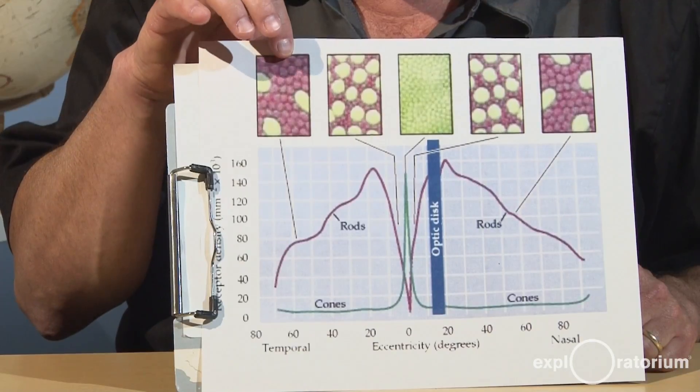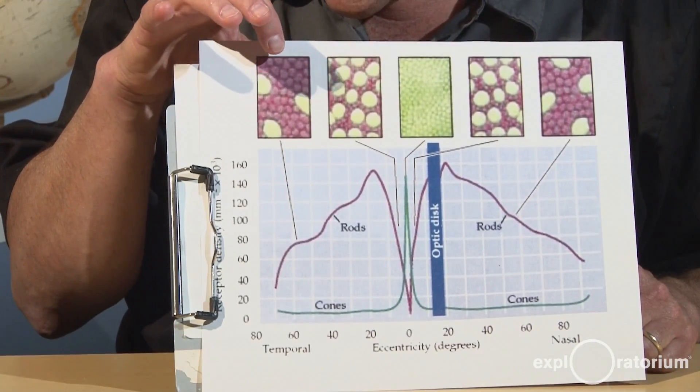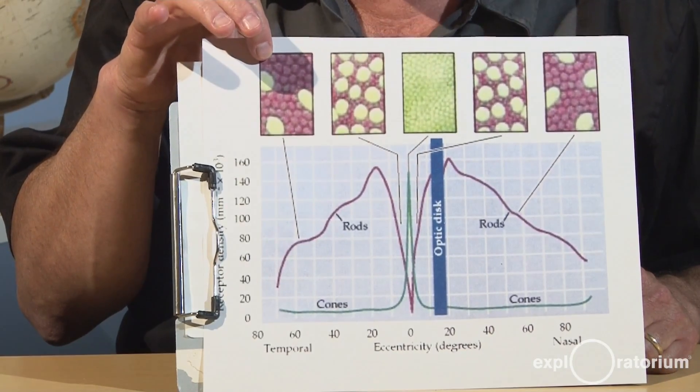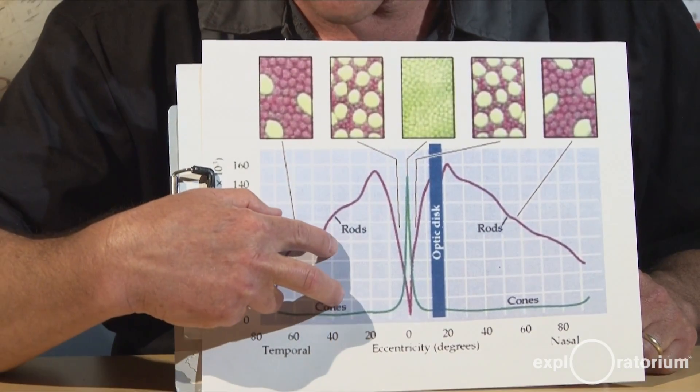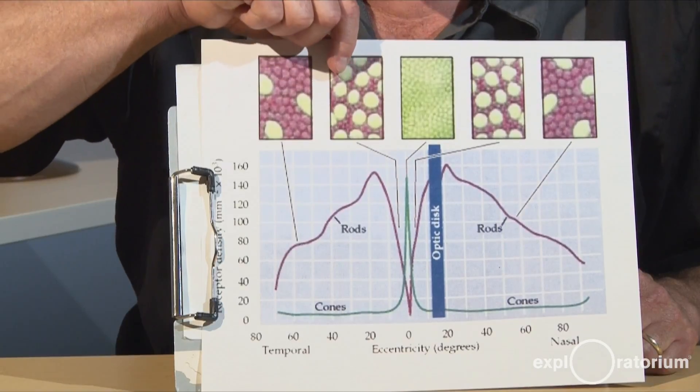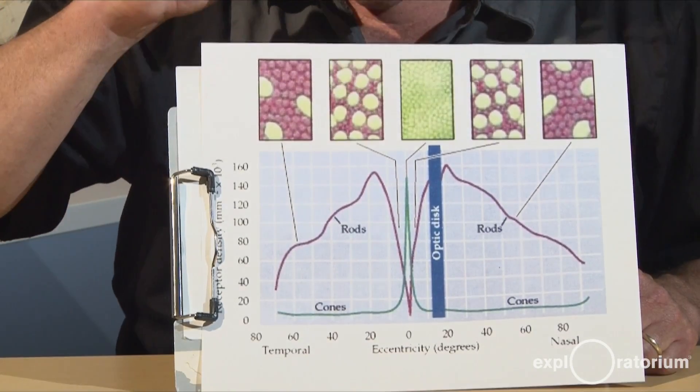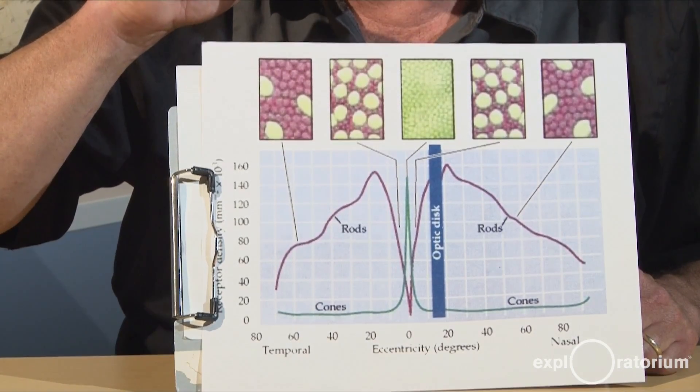Over here these pictures represent the distribution of rods and cones. As you can see, when you're on the outer edge of the eye, you have a lot of rods but you don't have a lot of cones. As you start getting closer and closer in, the number of cones starts going up, but the number of rods go up too.